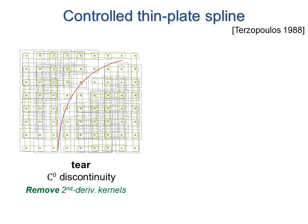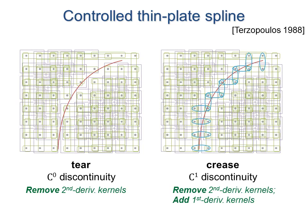Tears and creases adjust penalty terms that straddle the curves. Tears remove second-derivative kernels. For creases, Terzopoulos adds axis-aligned first-derivative kernels. However, a diagonal curve links together distant pixels. We improve results by using a generalized kernel.